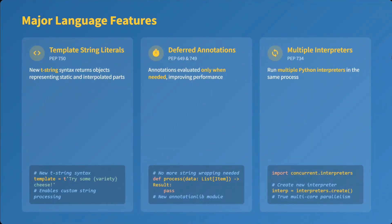The first major language feature is template string literals. A new t-string syntax has been introduced which represents both static and interpolated parts. You must already know f-strings — similarly, a t-string has come in, which helps in safer SQL executions.